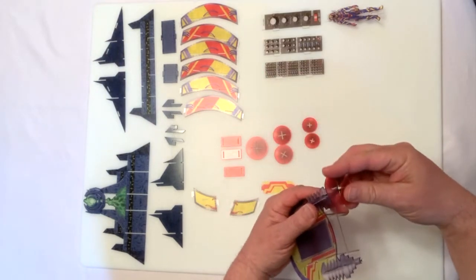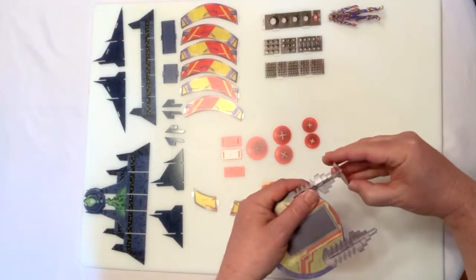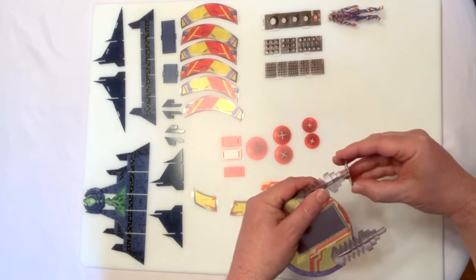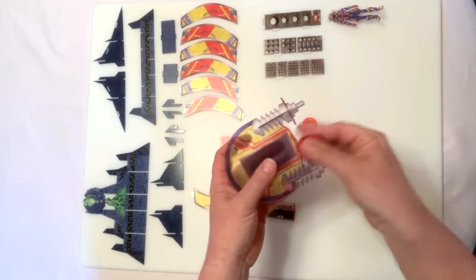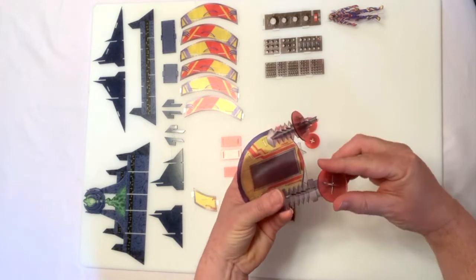Step five, slide the six red discs onto the sonic cannons. Three on each side in descending order from largest first to smallest last.